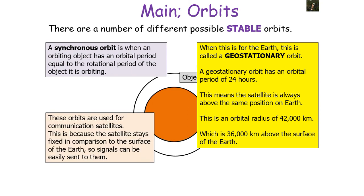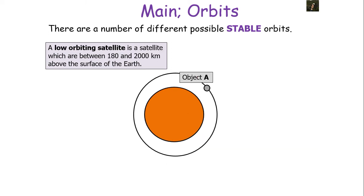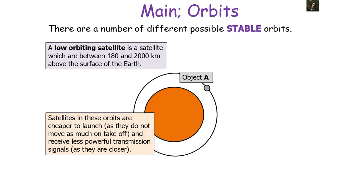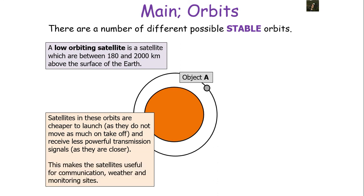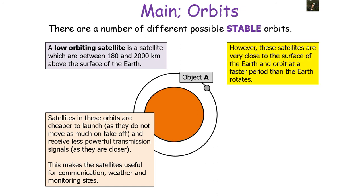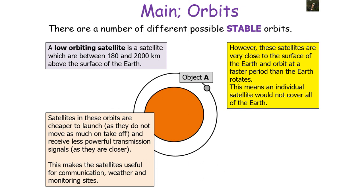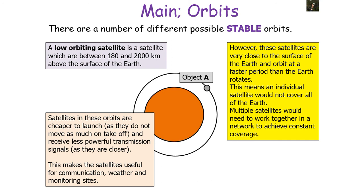Geostationary orbit is achieved at an orbital radius of about 42,000 km, which is about 36,000 km above the Earth's surface. Remember to account for the planet's own radius since orbital radius is measured from the centre of the planet. These orbits are used for communication satellites because the satellite stays fixed relative to the Earth's surface, so signals can be easily sent to them. A low-orbiting satellite sits between 180 and 2,000 km above the surface; satellites here are cheaper to launch and receive less powerful transmission signals because they are closer.